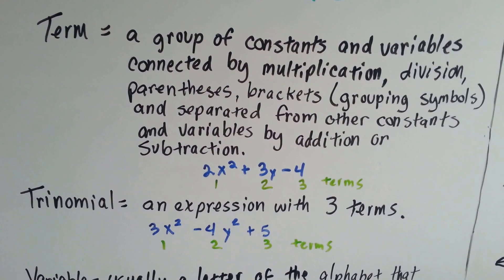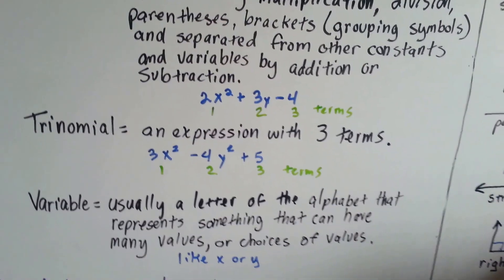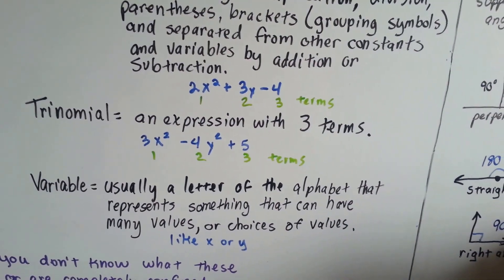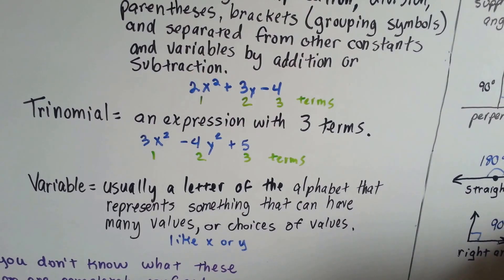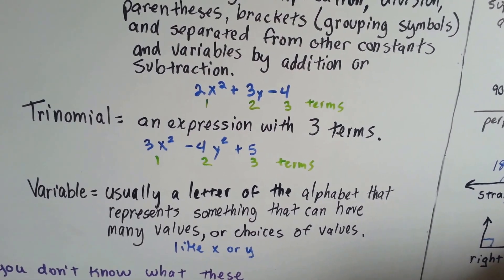Trinomial, an expression with three terms. Variable, usually a letter of the alphabet that represents something that can have many values or choices of values, like x or y.